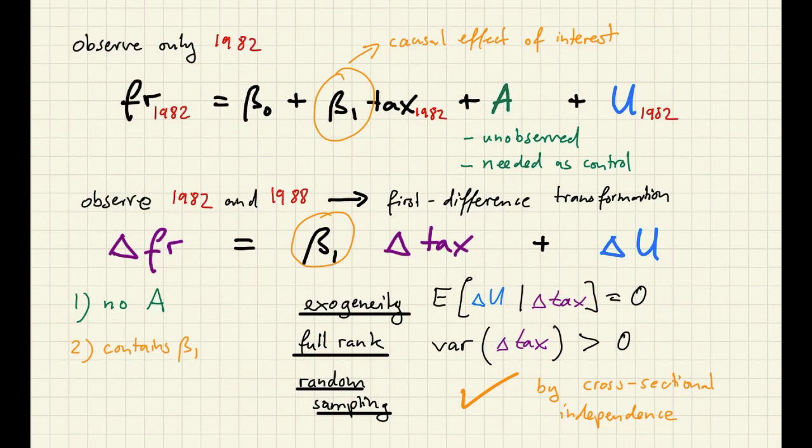To do all that, we need two things. First, we need a certain data richness. So we need data for 1982 and 1988 instead of just one year. So we need the panel structure in our data set. And then we also exploited some properties of the economic environment. But let's talk about the data structure first.